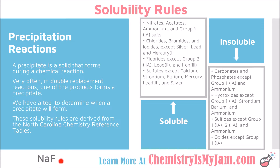Let's look at an example: sodium fluoride. Notice that all of the rules deal with anions — negatively charged ions found at the end of the compound. So in sodium fluoride, we look for a rule about fluorides. That rule tells me that all fluorides are soluble except group 2, lead 2, and iron 3. Because sodium is not one of the exceptions, sodium fluoride is soluble. We put AQ beside it to indicate it is aqueous — a precipitate did not form.